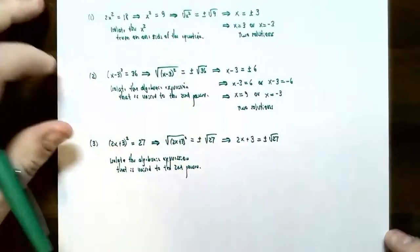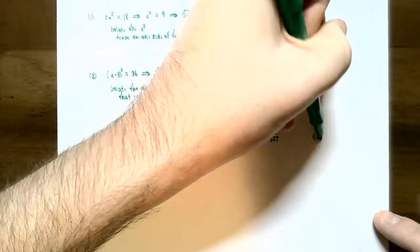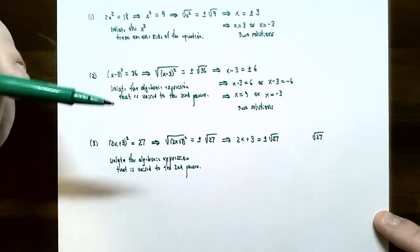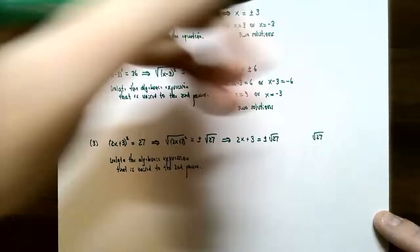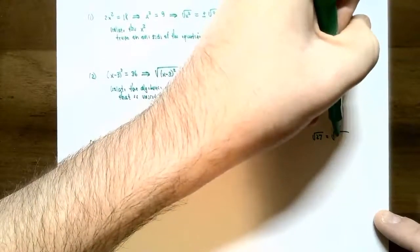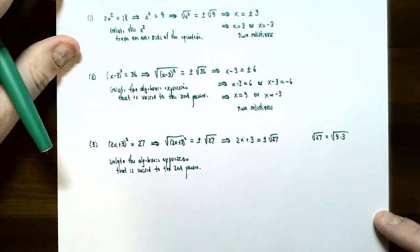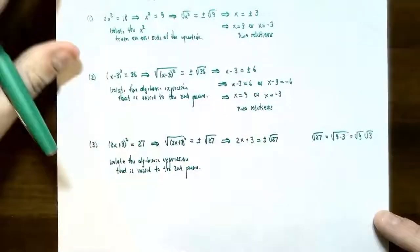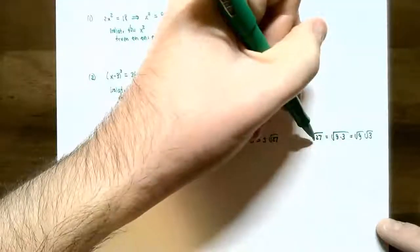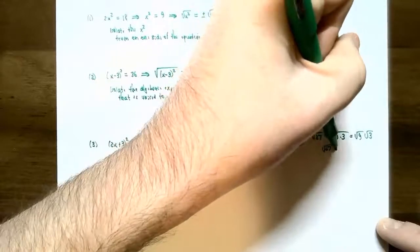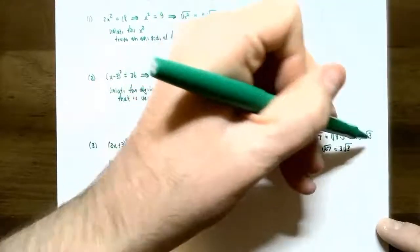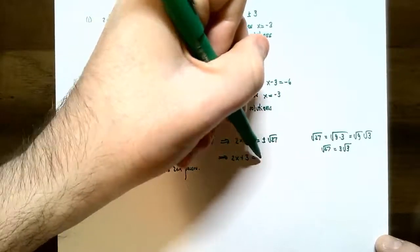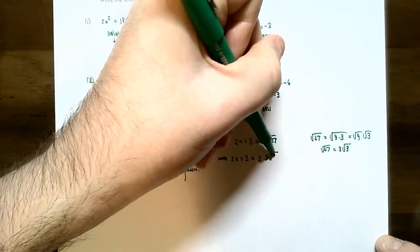We need to simplify the square root of 27. Think about the largest perfect square that divides evenly into 27 — that's 9, since 9 times 3 equals 27. Using the property that the square root of a product equals the product of the square roots, the square root of 27 equals the square root of 9 times the square root of 3, which is 3 times the square root of 3. So go back to the equation and replace: 2x plus 3 equals plus or minus 3 square root of 3. Make sure you simplify square roots whenever you can.